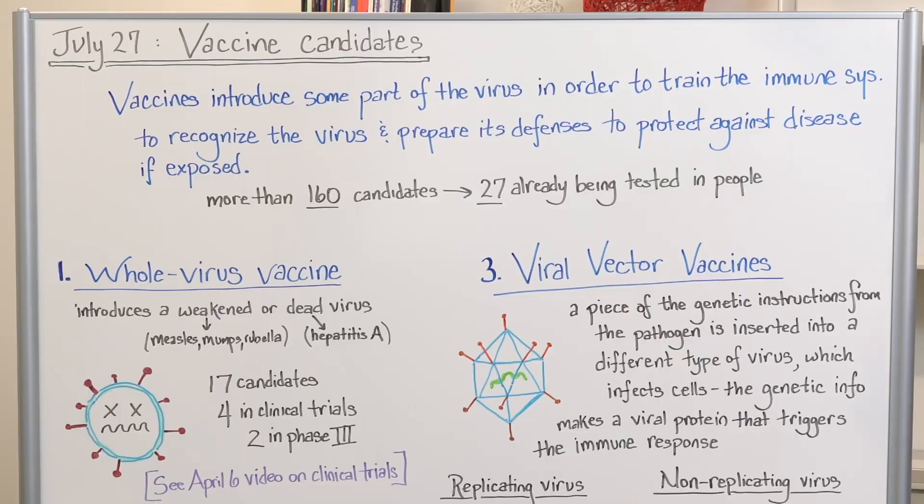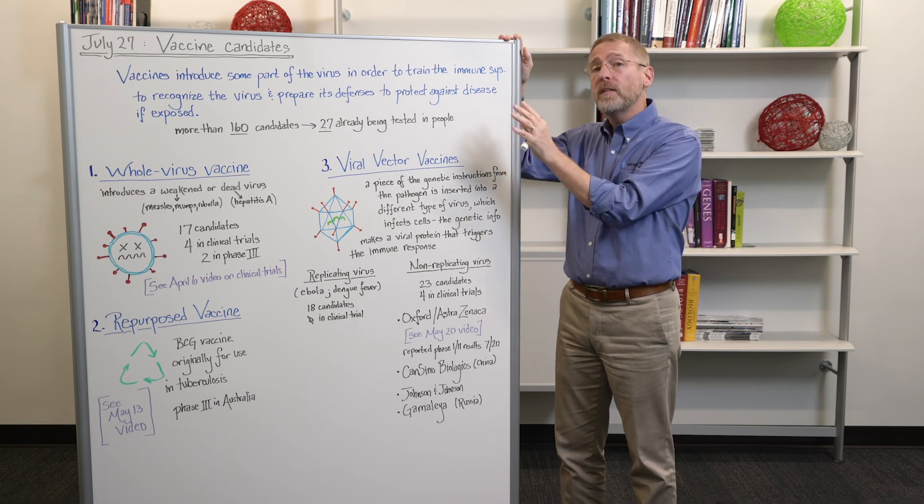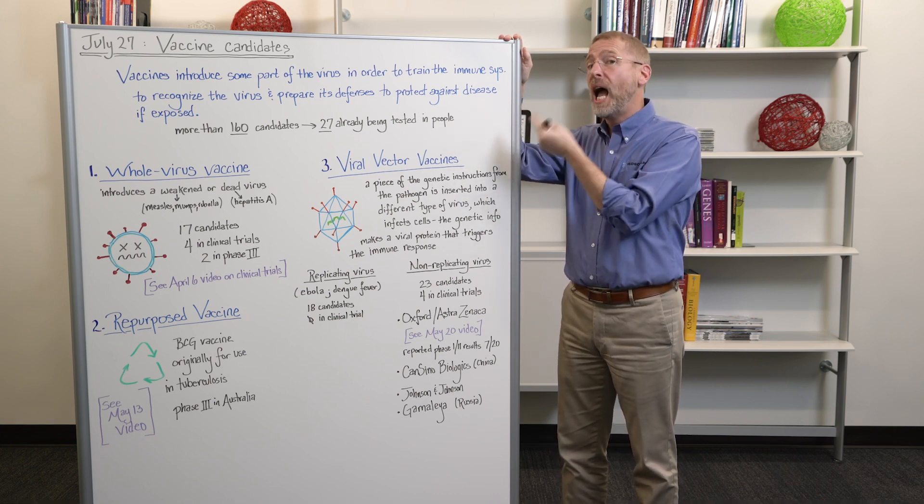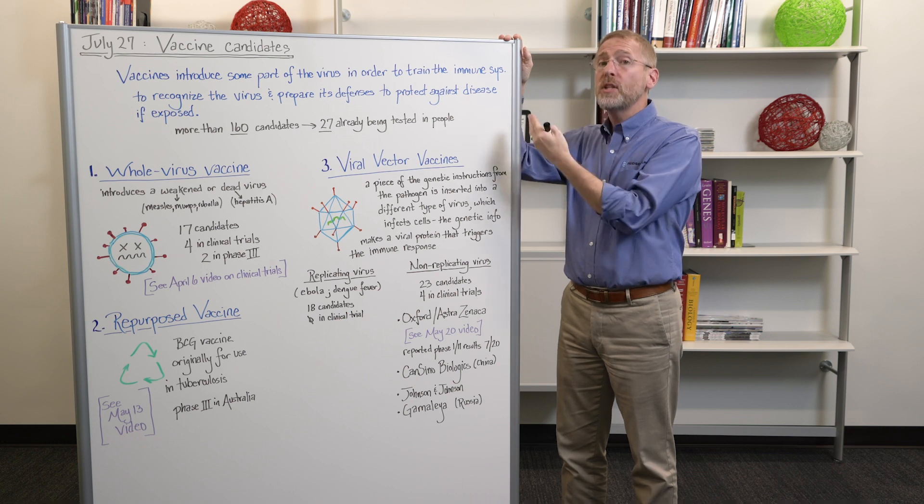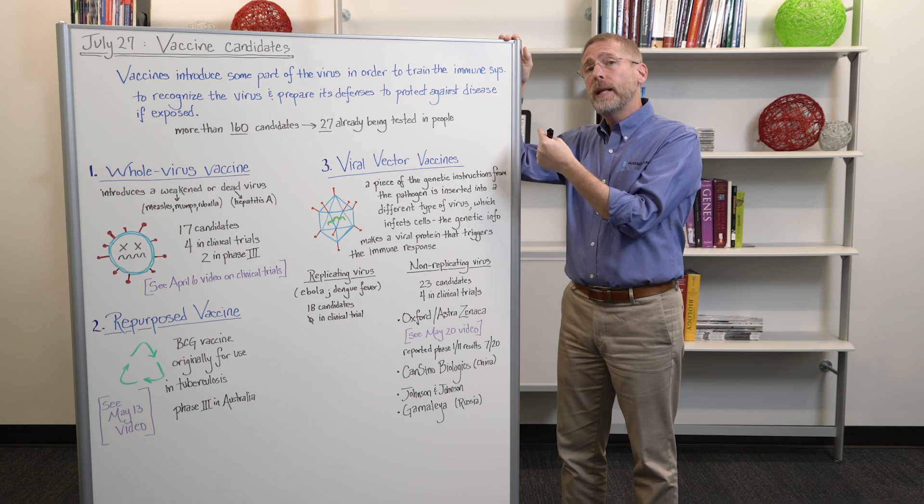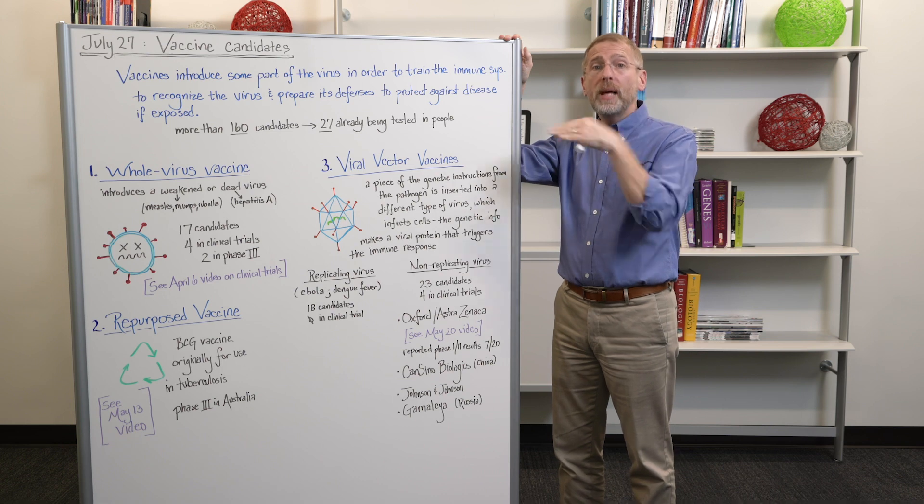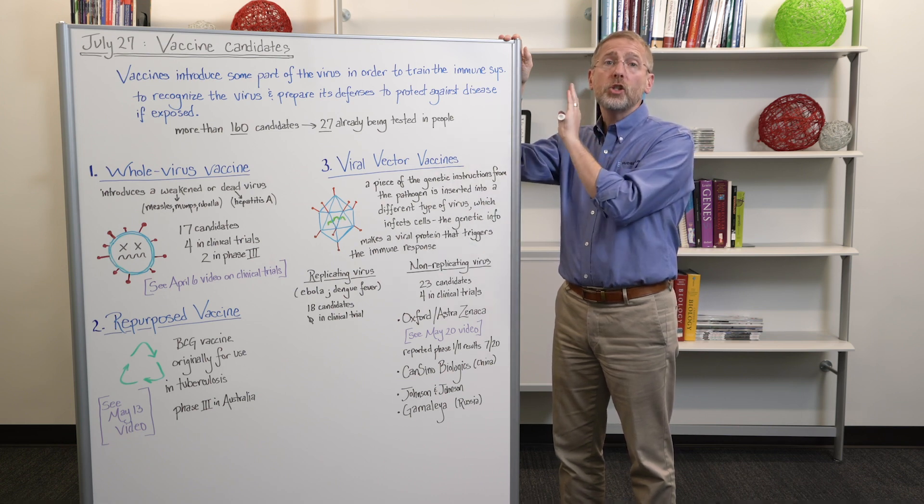Vaccines. The goal of a vaccine is to introduce some part of the virus into the body in order to train the immune system to recognize the virus and prepare a set of defenses that protect against disease when exposed. So the goal is to get some bit of the virus into the body so the immune system goes, I haven't seen that before, builds up an immune response in preparation so that if the person is actually infected later, the immune system says, I see you, I remember you,